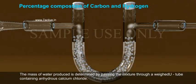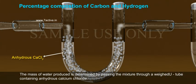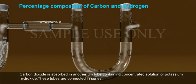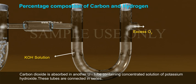The mass of water produced is determined by passing the mixture through a weighed U-tube containing anhydrous calcium chloride. Carbon dioxide is absorbed in another U-tube containing concentrated solution of potassium hydroxide.